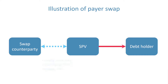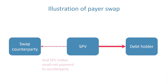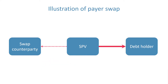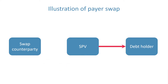In the typical case, the variable rate will remain lower than the fixed rate agreed on the swap. To settle the contract, this means that the company only has to pay the difference between the higher fixed rate and the lower variable rate. However, if the variable rate ever rises above the fixed rate agreed, it is the swap counterparty who then has to pay the company the difference between the variable rate and the fixed rate.